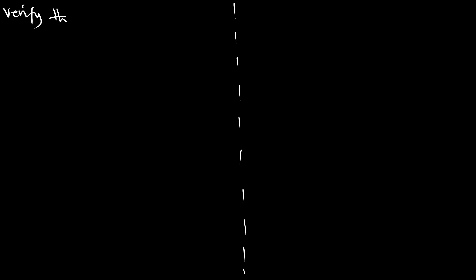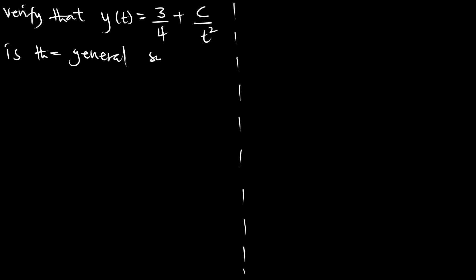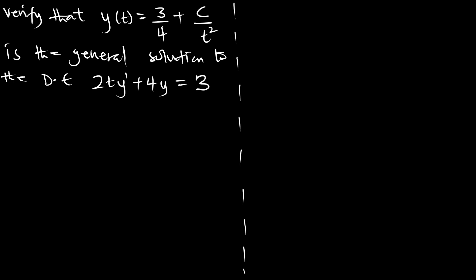Let's also verify if the given expression is a solution to the differential equation. Here we have to verify that y as a function of t, which equals 3/4 + c/t², is the general solution to the differential equation 2t·y' + 4y = 3. Our y is 3/4 + c/t².